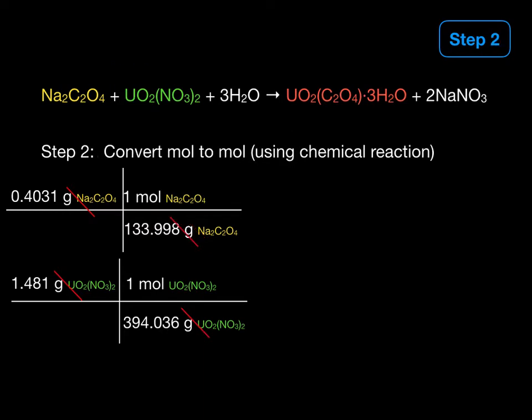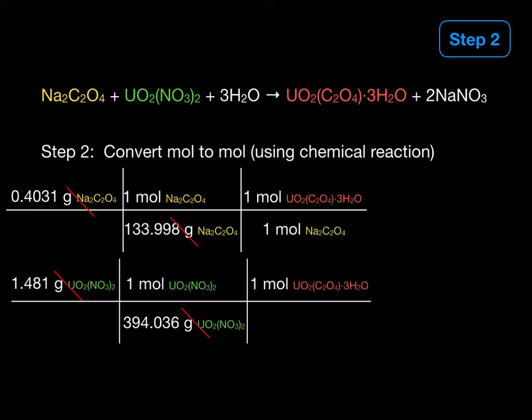In step two, we want to convert from moles to moles using the balanced chemical reaction. Let's go ahead and get this set up. In the balanced chemical reaction, we see that one mole of product will react with one mole of sodium oxalate. So let's go ahead and write these in here. One mole of product is formed per one mole of sodium oxalate and one mole of product is formed from one mole of uranyl nitrate.